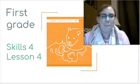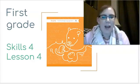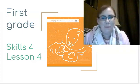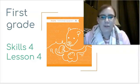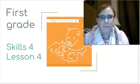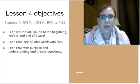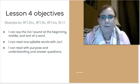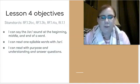Hello scholars! My name is Miss Janes and I will be working on your first grade skills lessons with you. Today we're on Skills Unit 4, Lesson 4. Our objectives are to say the R sound at the beginning, middle, and end of a word, read one syllable words with R, and read a story with purpose and understanding as well as answer questions.